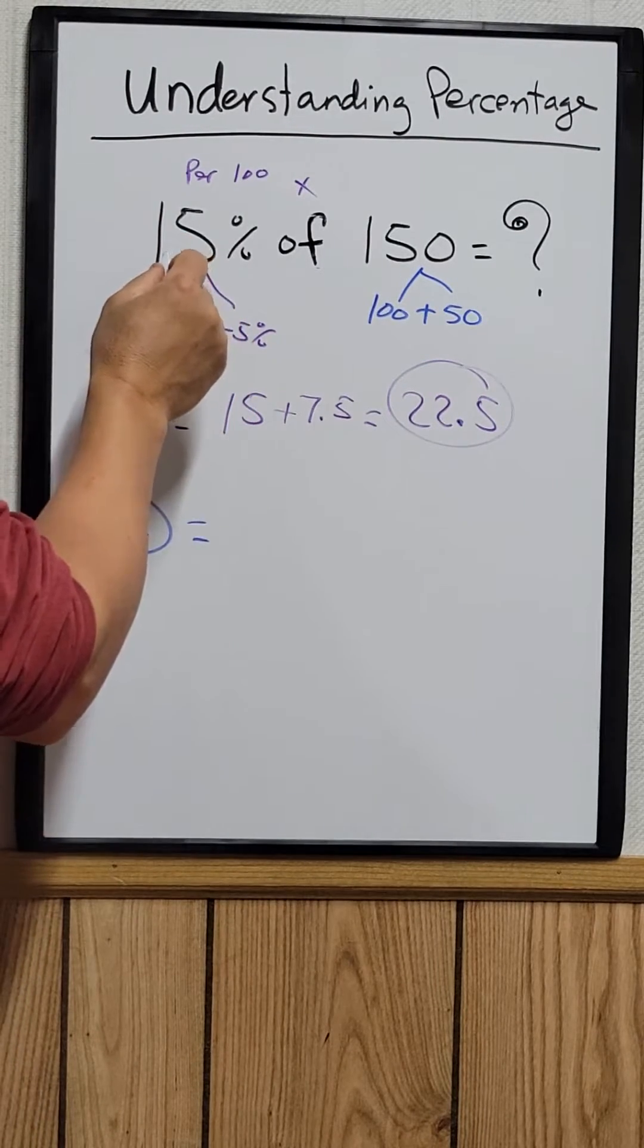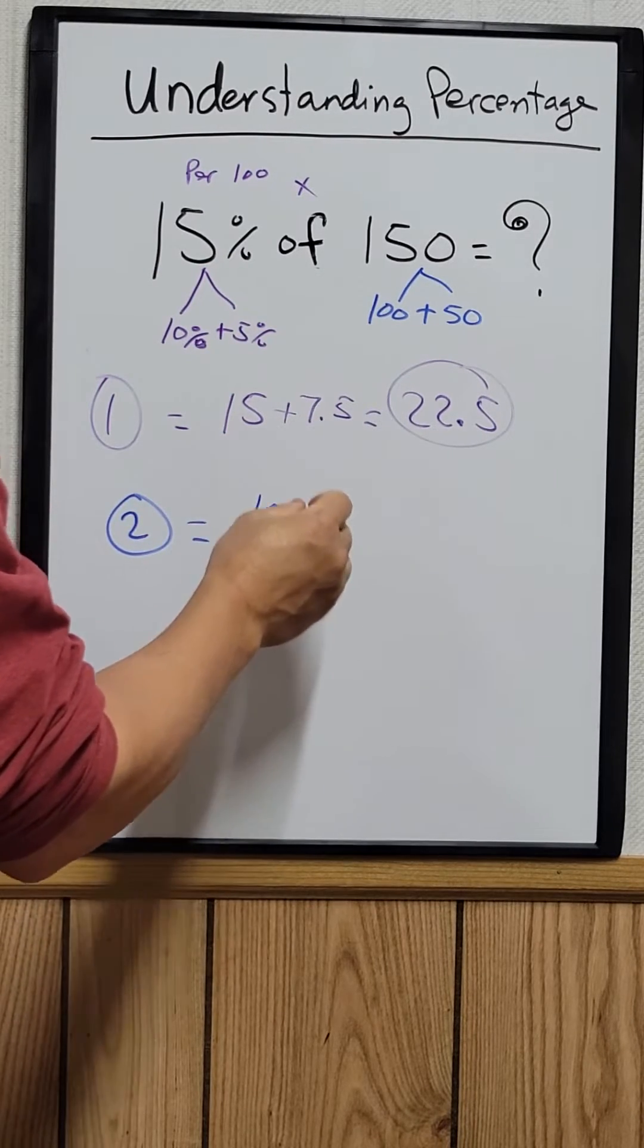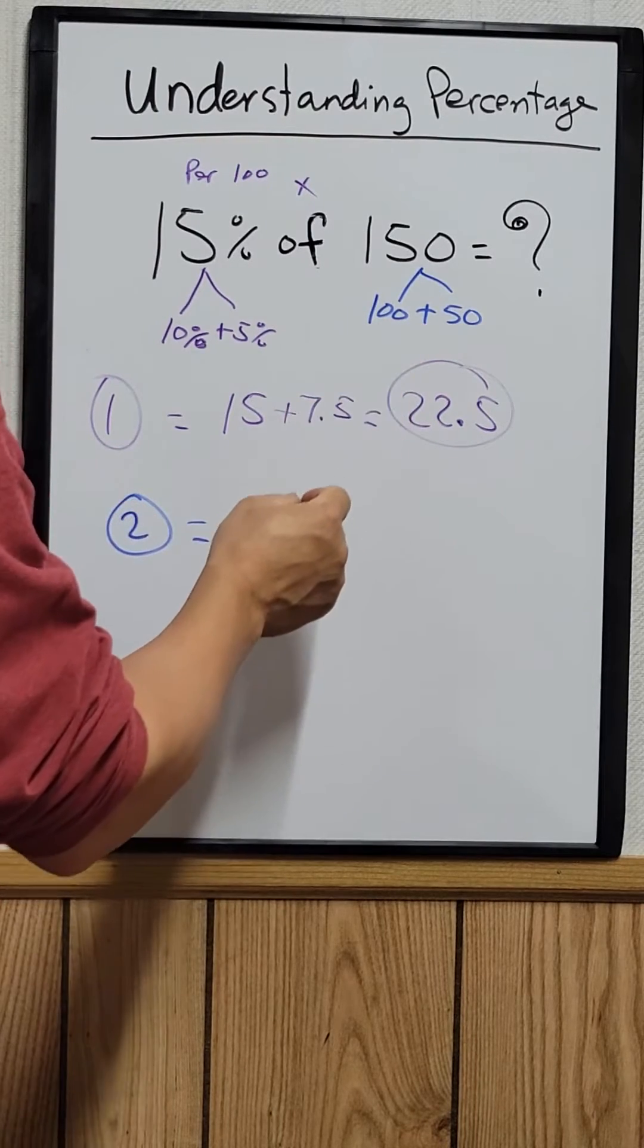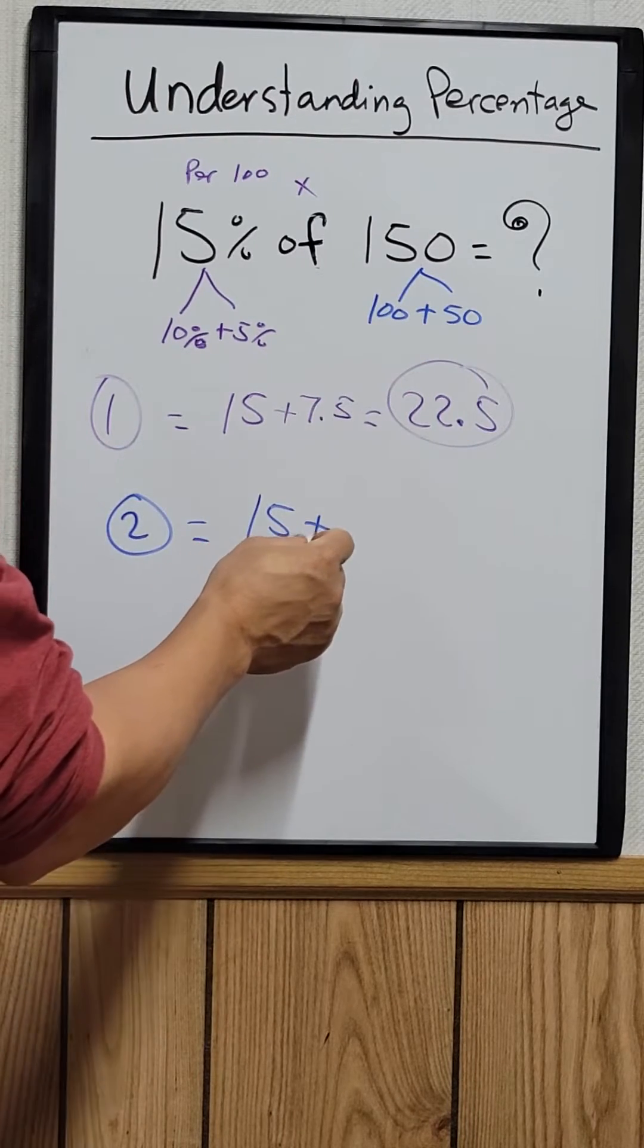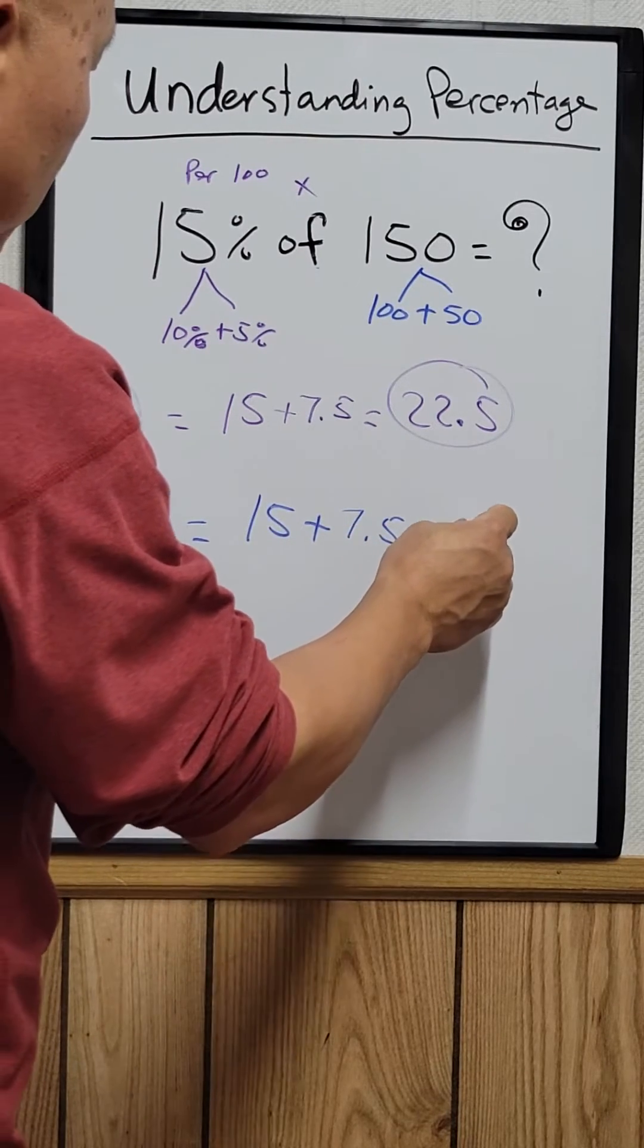So 15% of 100 is just 15. 50 is half of 100, so half of 15 is equal to 7.5.